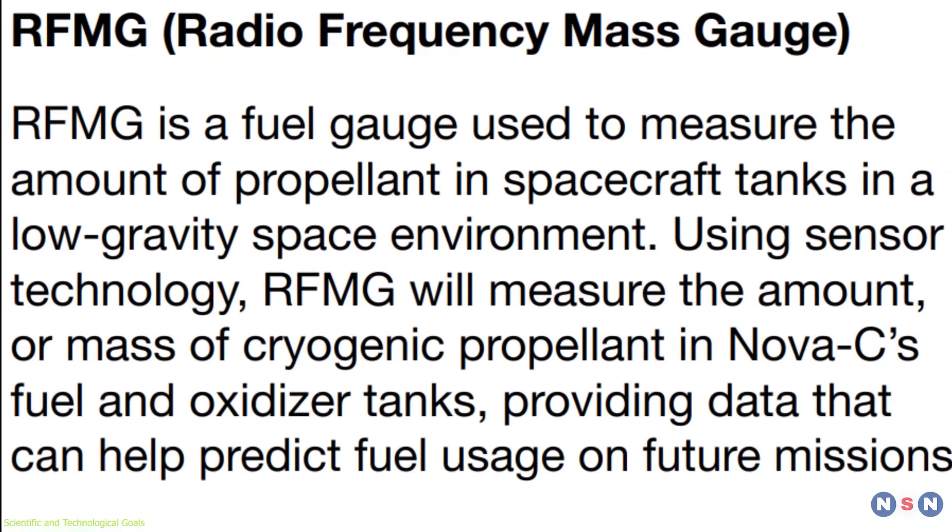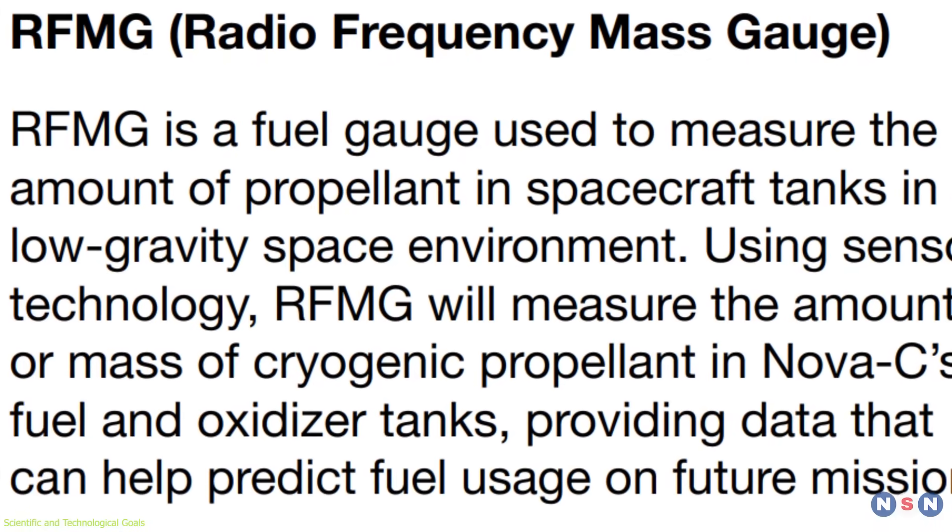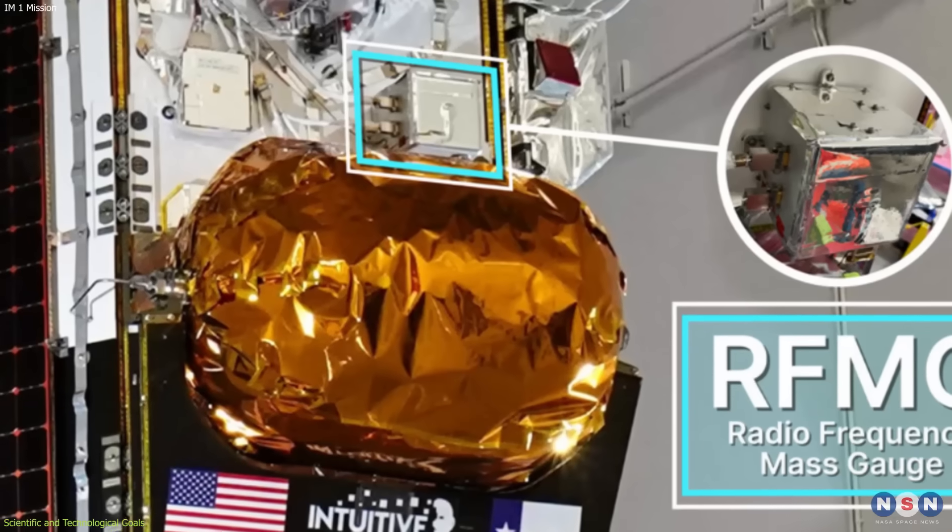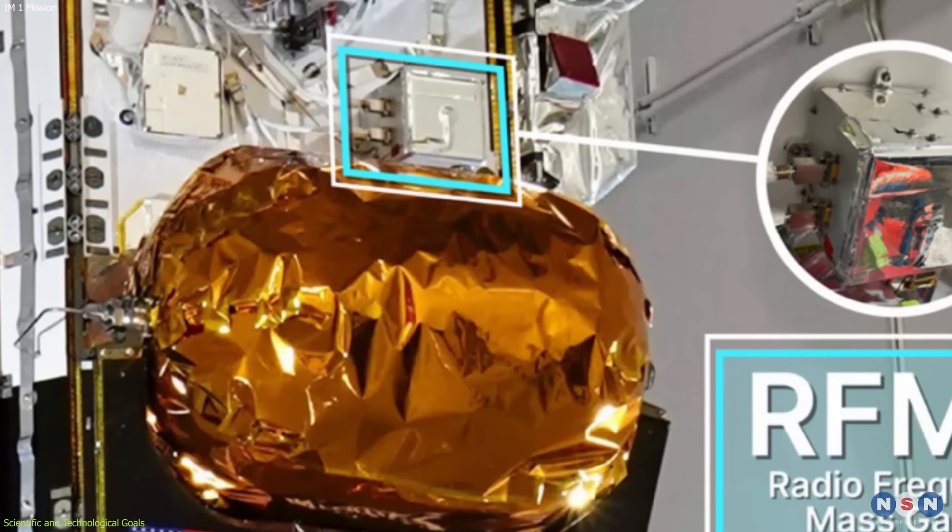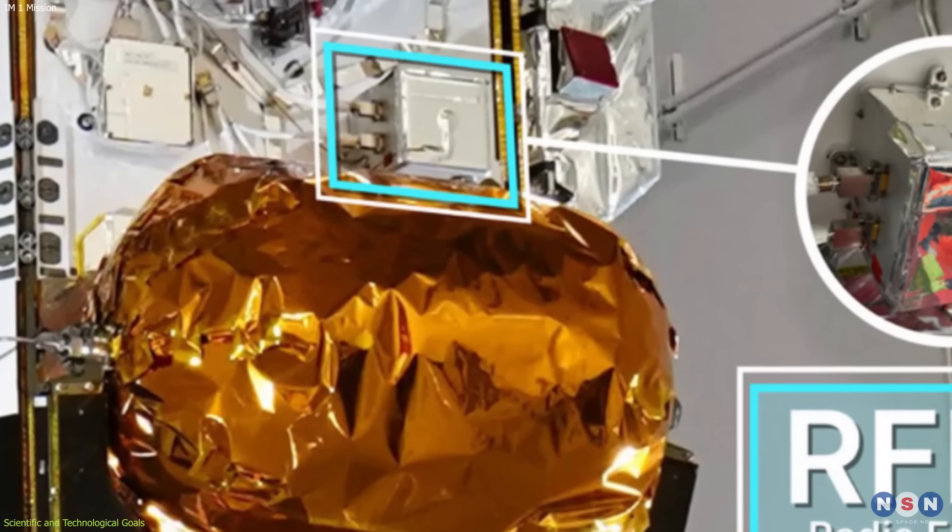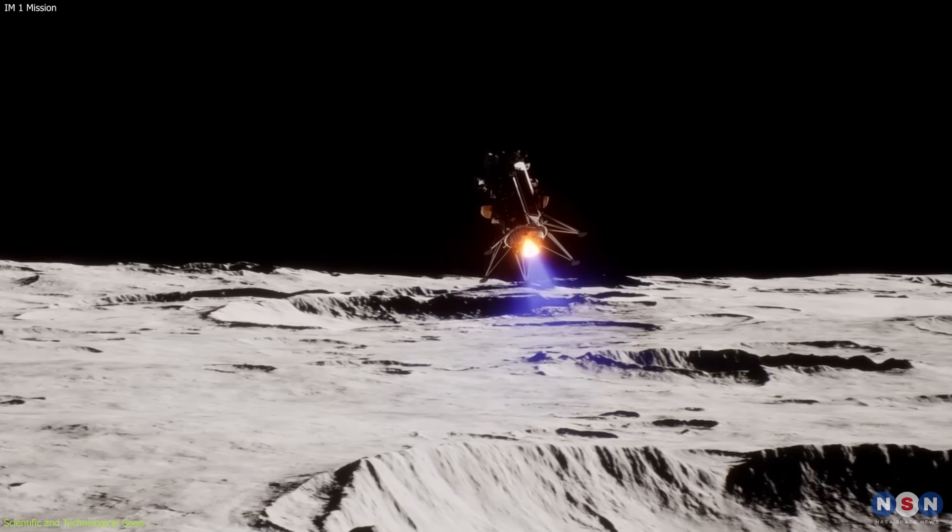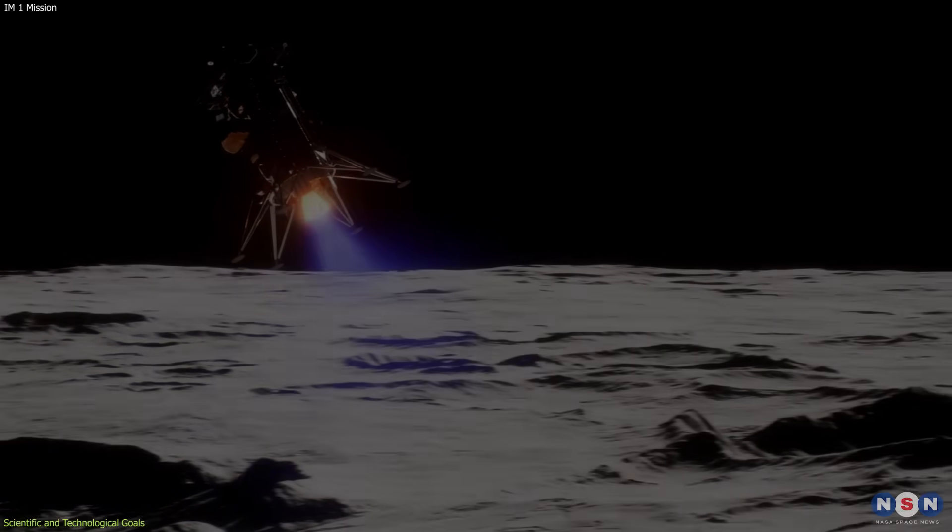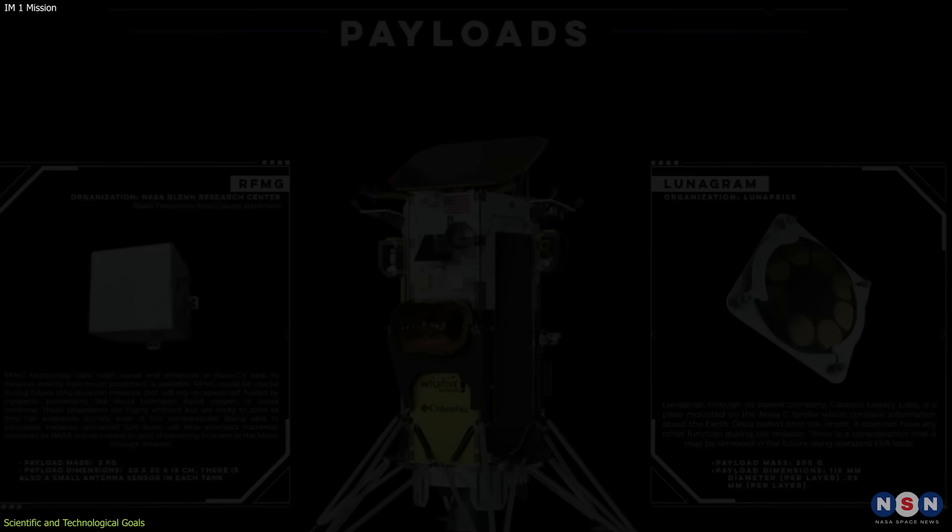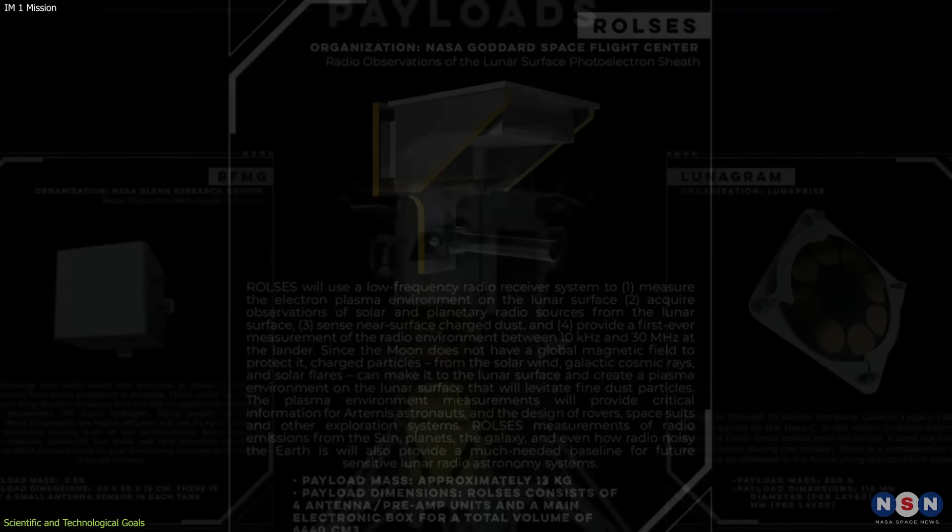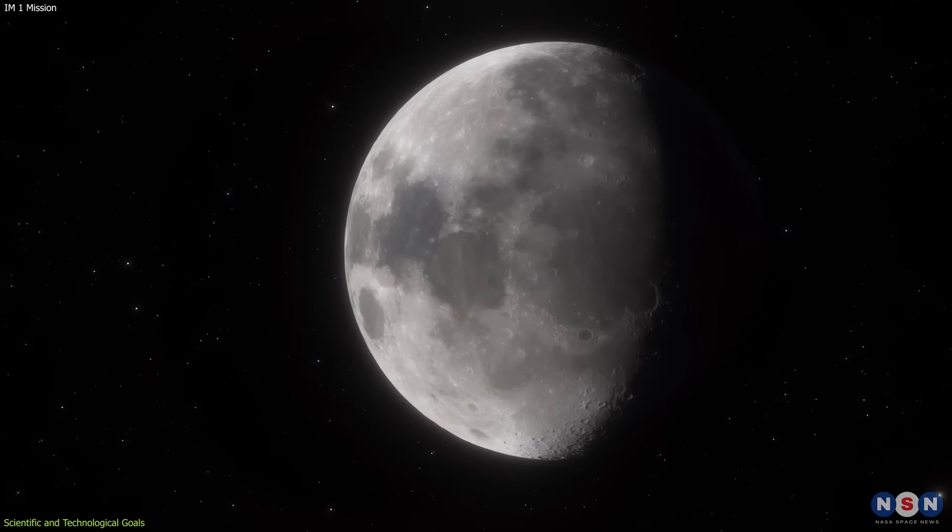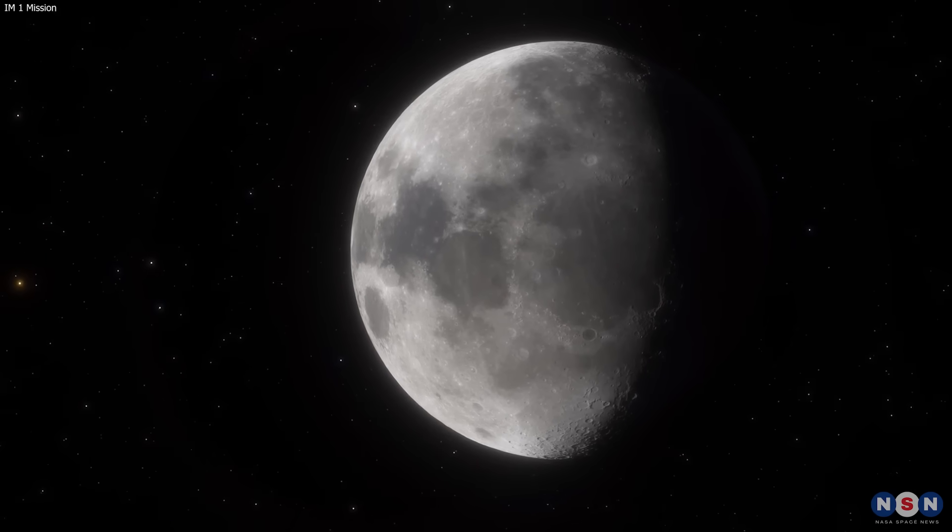And finally, the RFMG, or Radio Frequency Mass Gauge, a device that will use radio waves to measure the mass of the lander and its remaining propellant, providing vital information for the lander's operation and performance. These payloads will provide valuable data and insights that will help us understand the Moon better, and also prepare us for future human and robotic missions there.